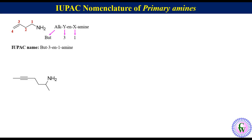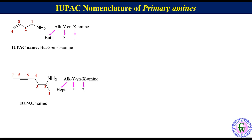Example of an amine with a triple bond in the R group. The general IUPAC name is alk-Y-ine-X-amine. Numbering of the parent chain will be 1, 2, 3, 4, 5, 6, and 7. Since there are 7 carbon atoms in the parent chain, ALK is 'hept'. The position of the triple bond is 5, so Y is 5, and NH₂ is attached to C2, so X is 2. Thus the IUPAC name will be hept-5-in-2-amine.